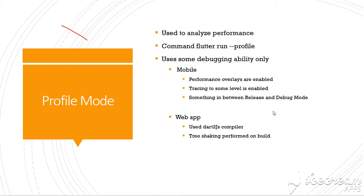What is profile mode in Flutter? Flutter has three kinds of modes: debug mode, profile mode, and release mode. Debug mode is normally used for debugging your application during development, and in both profile and debug mode, all tracing information is switched on. The difference is that in profile mode, only performance-related tracing information is enabled.